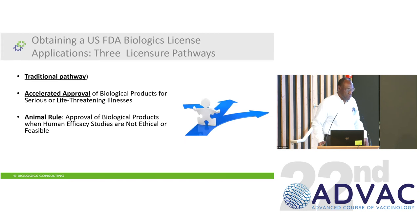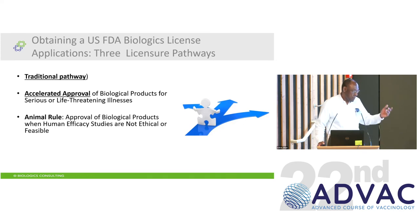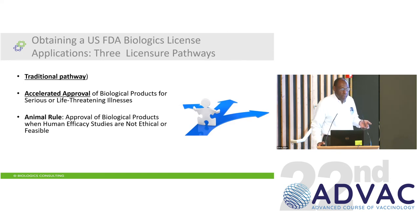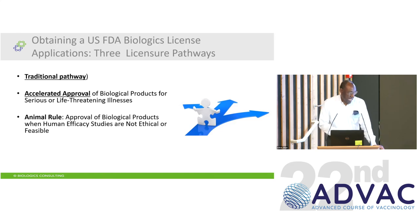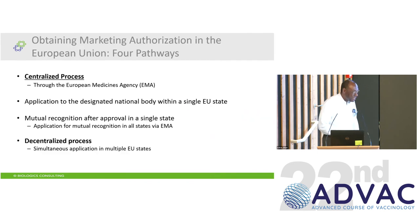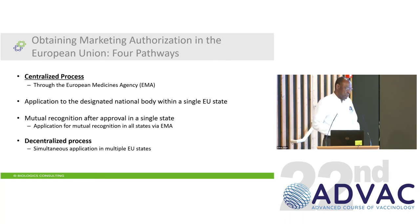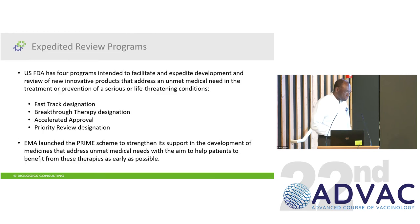In the US there are three pathways to licensure: the traditional pathway using a randomized controlled trial; accelerated approval, where licensure is based on a surrogate endpoint such as immunogenicity without a full efficacy study — with a required Phase 4 efficacy study to follow; and the animal rule. In Europe there is a centralized process run by the EMA and a decentralized process run by member states. There are also expedited review programs in the US and at the EMA for products meeting unmet medical needs in serious and life-threatening diseases.